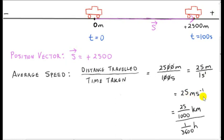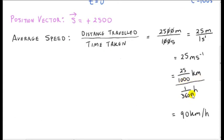If we want to convert this into the more usual unit for the speed of a car — that is, kilometers per hour — we need to convert meters to kilometers by dividing 25 meters by 1000, and convert one second to hours. There are 3600 seconds in an hour, so one second is 1 over 3600 of an hour. Working this out, we get 90 kilometers per hour. So on average, the car covers a distance of 90 kilometers in each hour. We can also write this as 90 km·h to the power of minus one.